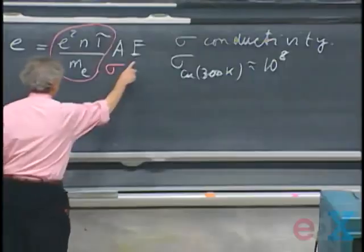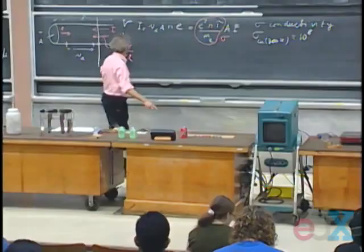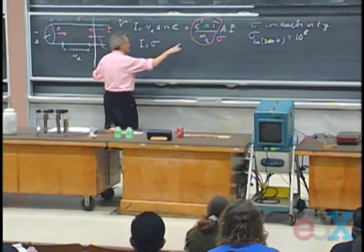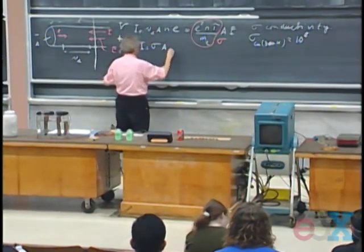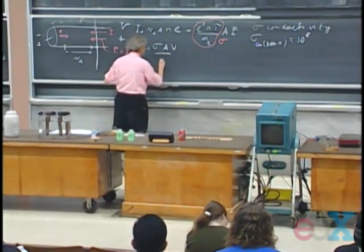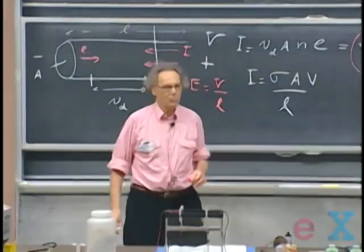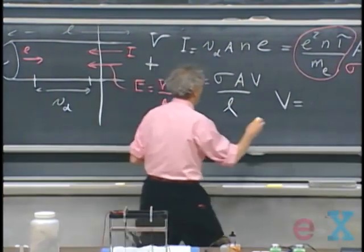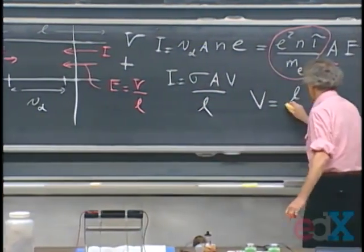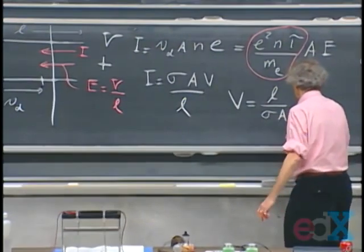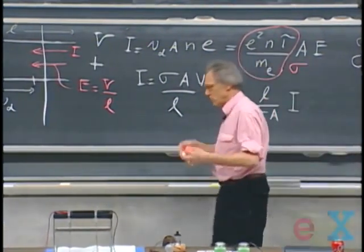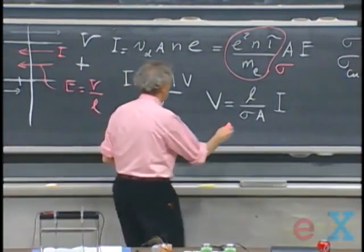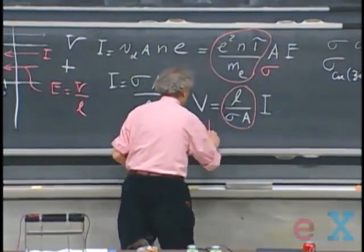I can massage this a little further because E is V divided by L. And so I can write now that the current is that sigma times A times V divided by L. I can write it down a little bit differently. I can say V therefore equals L divided by sigma A times I. And now you're staring at Ohm's law, whether you like it or not. Because this is what we call the resistance capital R.